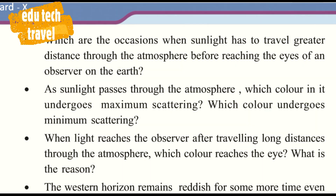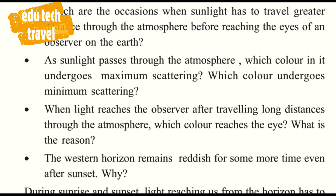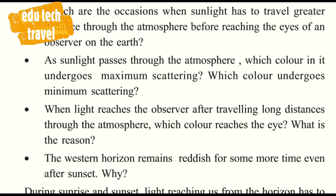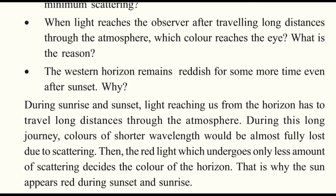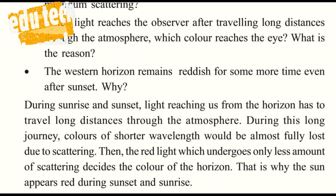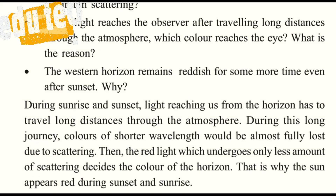Which are the occasions when sunlight has to travel a greater distance through the atmosphere before reaching the eyes of an observer on the earth? Morning and evening. As the sunlight passes through the atmosphere, which color undergoes maximum scattering? When light reaches the observer after traveling a long distance through the atmosphere, which color reaches the eye? The red is the reason that scattering rate is less, so it can travel more distance.